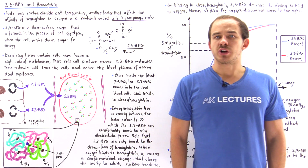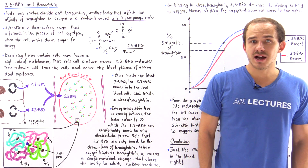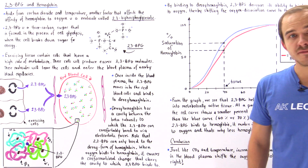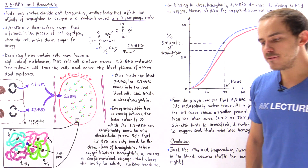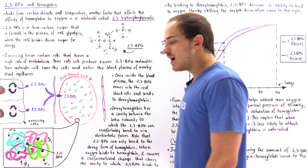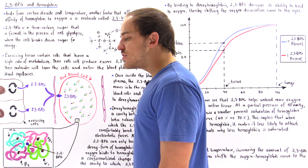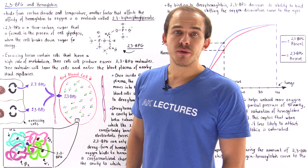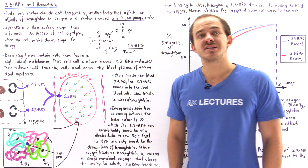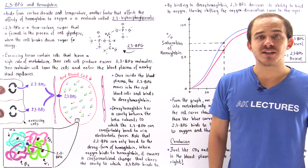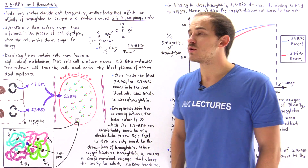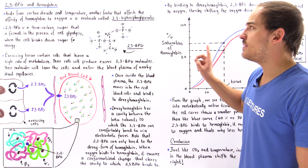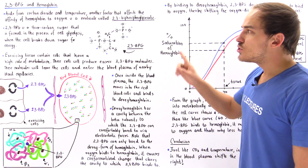Aside from temperature and carbon dioxide, another factor that influences hemoglobin's ability to bind oxygen and therefore affects the oxygen-hemoglobin dissociation curve is something known as 2,3-biphosphoglycerate, or simply 2,3-BPG.